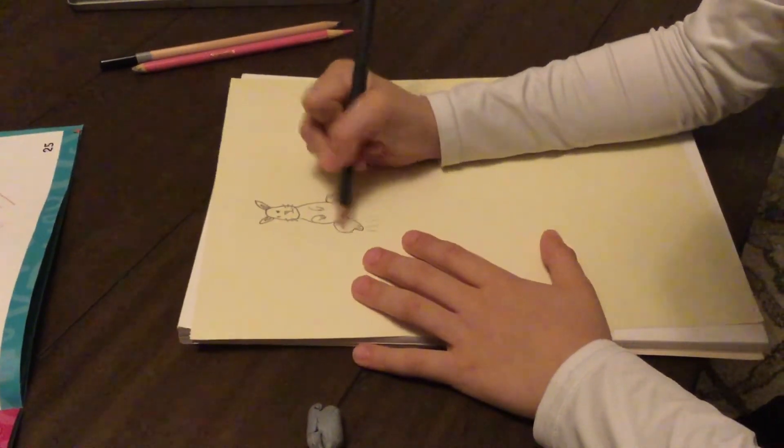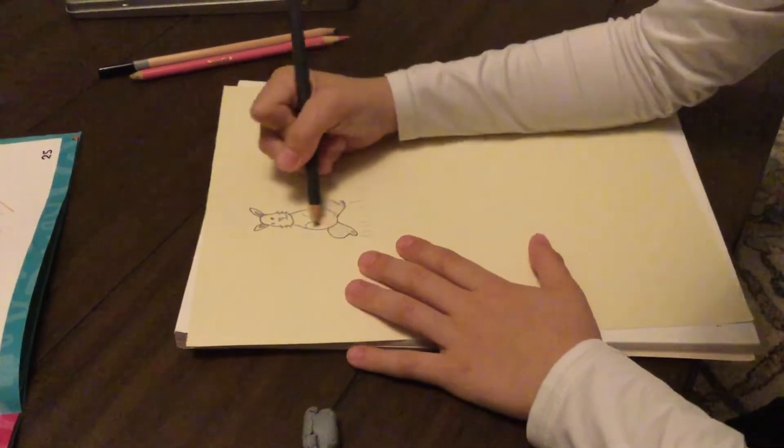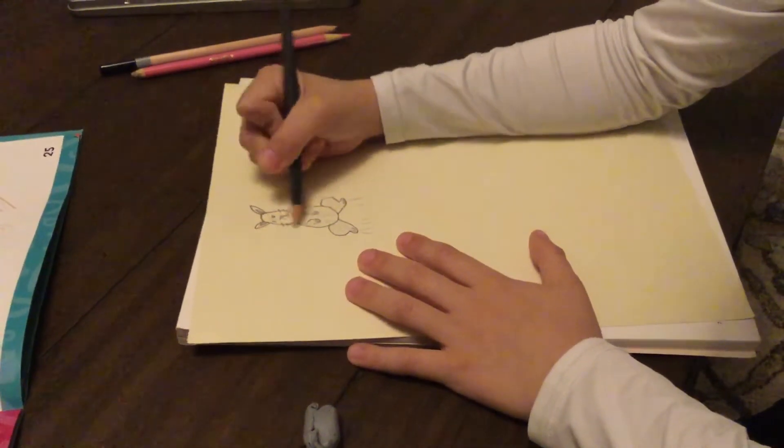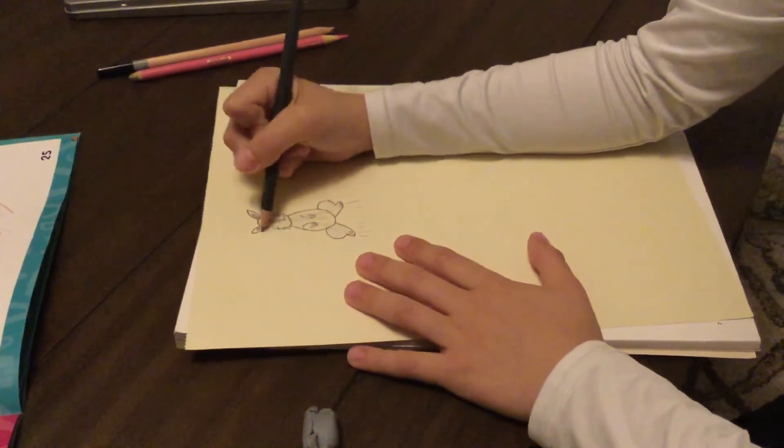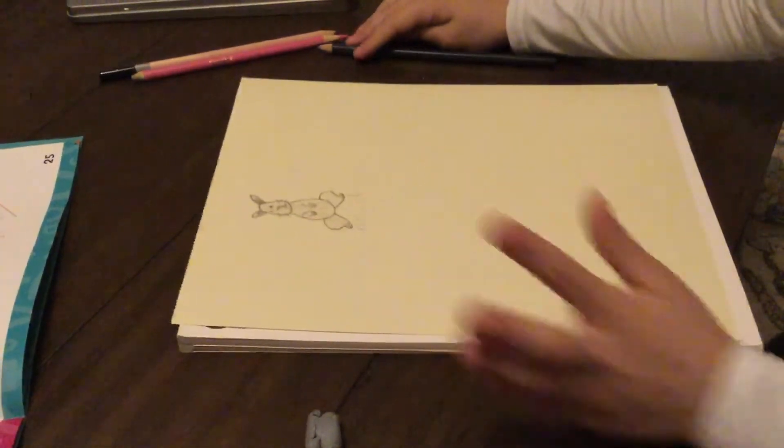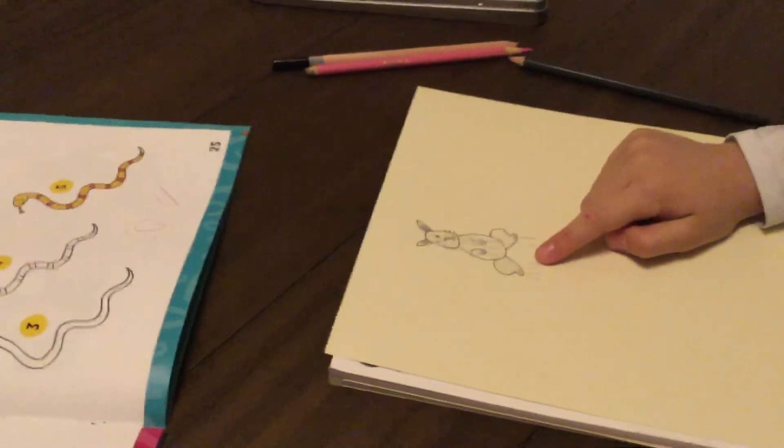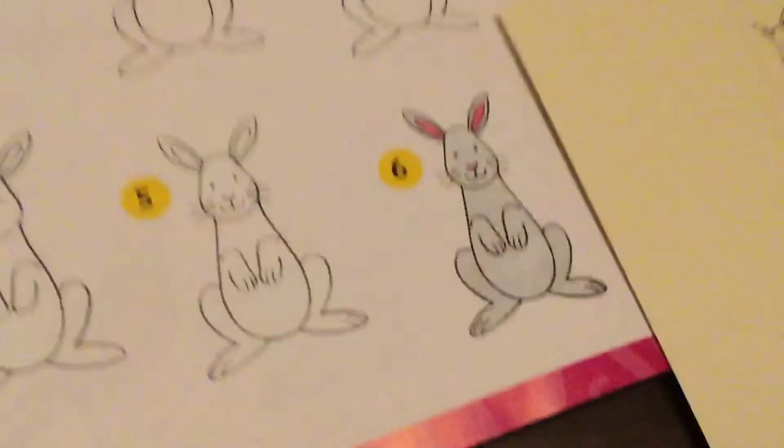And then color out the rest, and like this. Voila! I made him a jumping rabbit.